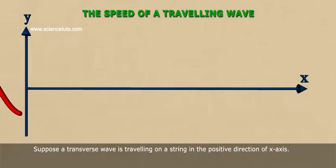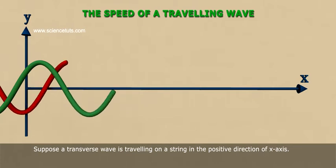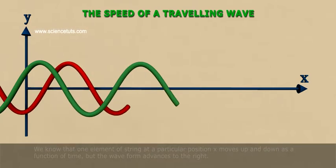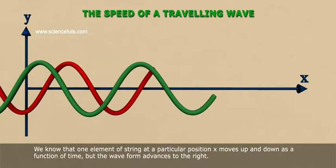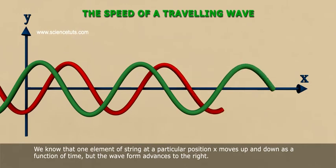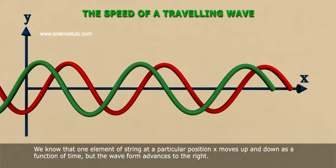The Speed of Travelling Wave. Suppose a transverse wave is travelling on a string in the positive direction of the x-axis. We know that one element of the string at a particular position x moves up and down as a function of time, but the waveform advances to the right.